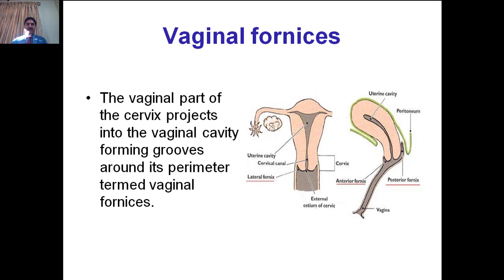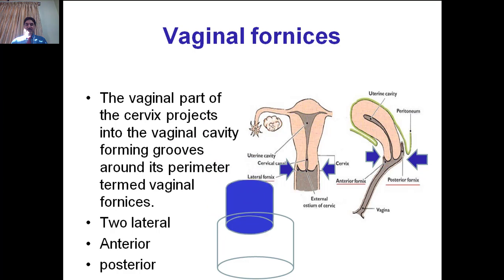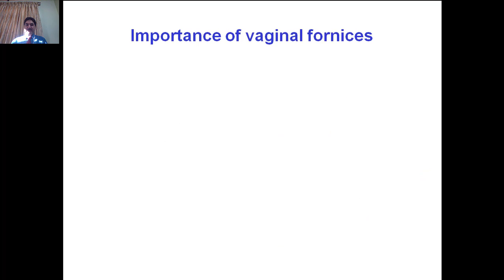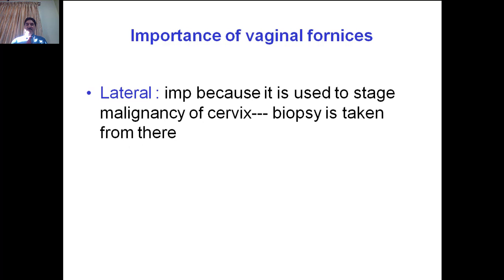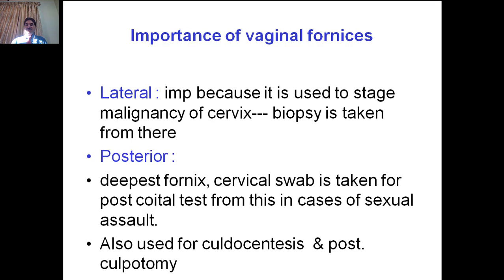The vaginal part of the cervix projects into the vaginal cavity, forming grooves around its perimeter termed vaginal fornices. There are two lateral fornices, one anterior and one posterior fornix. The lateral fornix is important because it is used to stage malignancy of the cervix — biopsy is taken from there for staging cervical malignancies. The posterior fornix is the deepest fornix of the vagina; it has medico-legal importance as a cervical smear is taken for post-coital testing in cases of sexual assault. It is also used for culdocentesis and posterior colpotomy.